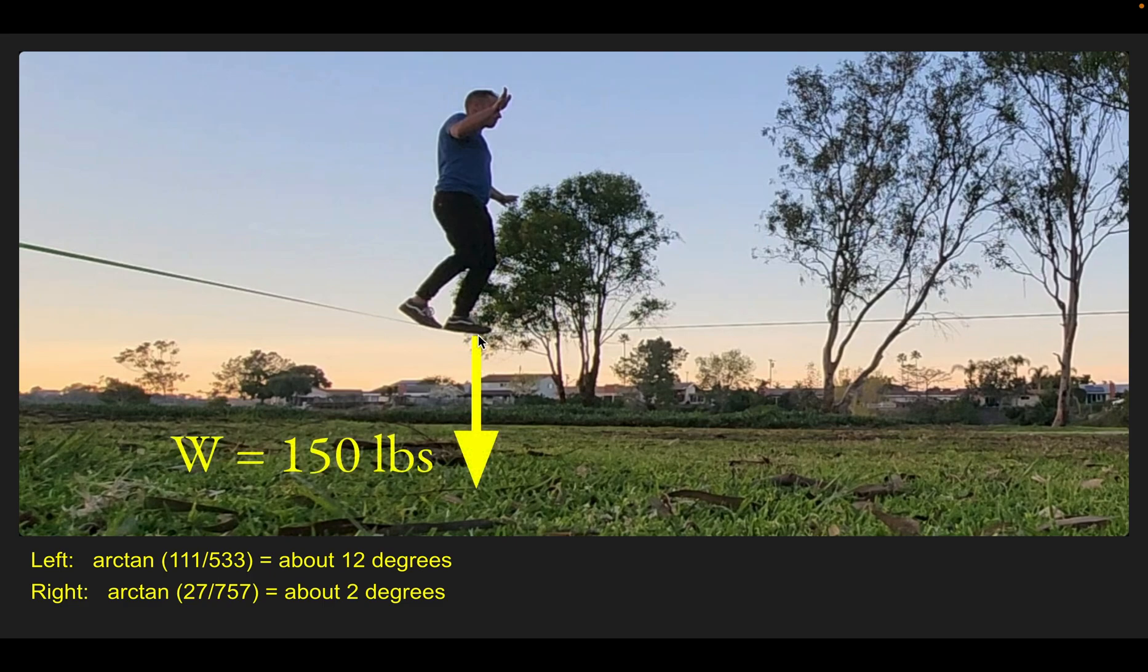Pushing downward would be my weight, 150 pounds. Pulling up and to the left would be what we're going to call tension one. Pulling up and to the right is what we're going to call tension two.